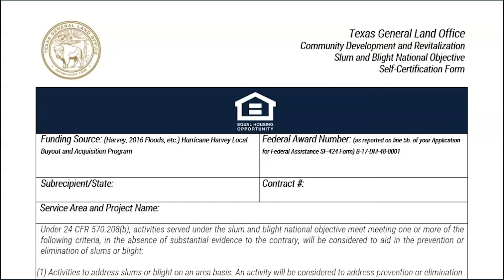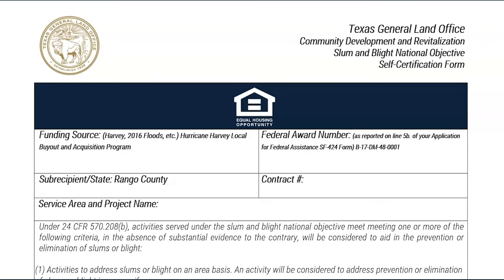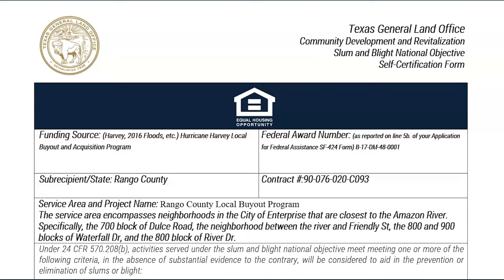Next, list the subrecipient that administers the funding. In this example, we are using Rango County. The contract number is the GLO number located at the top of the first page of the GLO contract. The next line asks for the service area and project name. For example, the project name is Rango County Local Buyout Program. The service area is the target buyout or acquisition area identified in the subrecipient's housing guidelines — for Rango County, this encompasses neighborhoods in the city of Enterprise closest to the Amazon River, specifically the 700 block of Dulce Road, the neighborhood between River and Friendly Street, and the 800 and 900 blocks of Waterfall Drive, and the 800 block of River Drive.